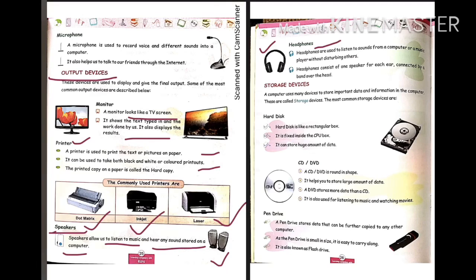So this is all about the output devices. Output devices are devices from which we get results — a final output. The common output devices are monitor, printer, speaker, and headphones. The monitor displays our work. If we have to print something — text, photo, or picture — we use the printer.